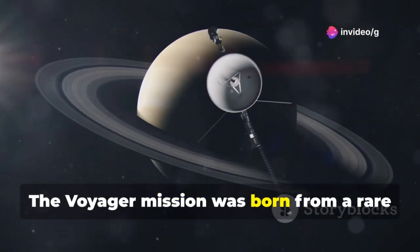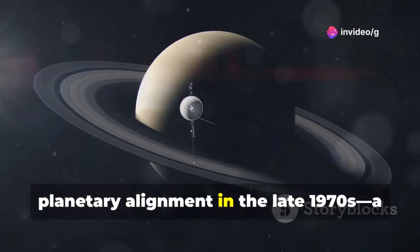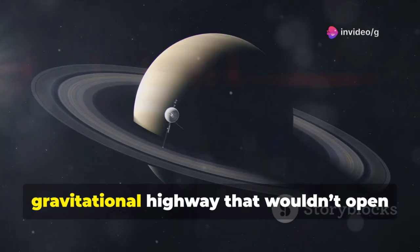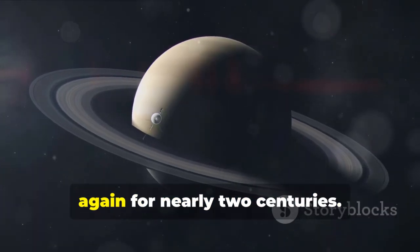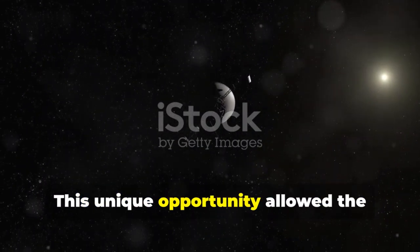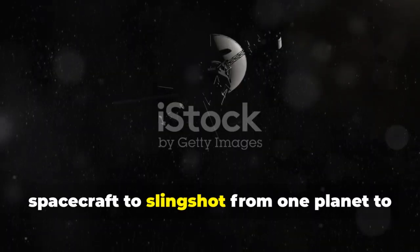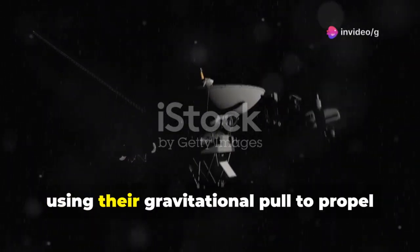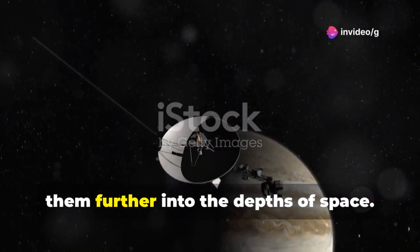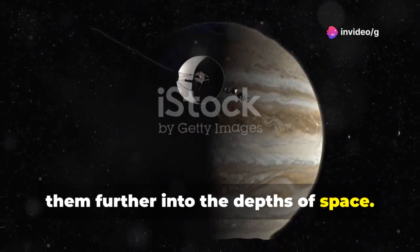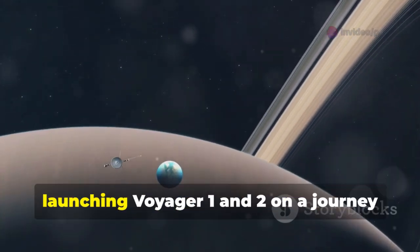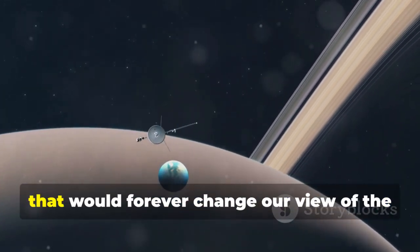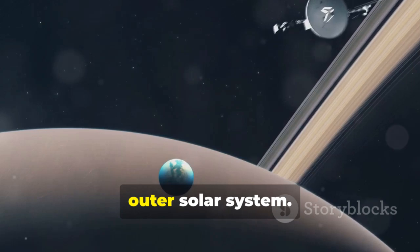The Voyager mission was born from a rare planetary alignment in the late 1970s, a gravitational highway that wouldn't open again for nearly two centuries. This unique opportunity allowed the spacecraft to slingshot from one planet to the next, using their gravitational pull to propel them further into the depths of space. NASA seized the chance, launching Voyager 1 and 2 on a journey that would forever change our view of the outer solar system.